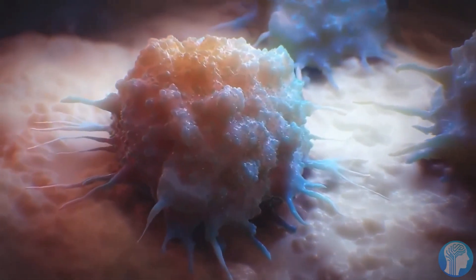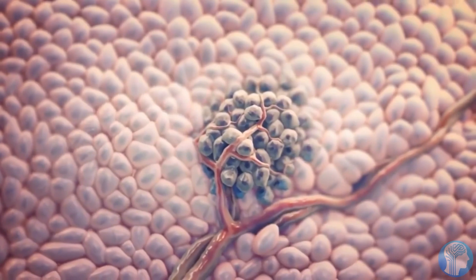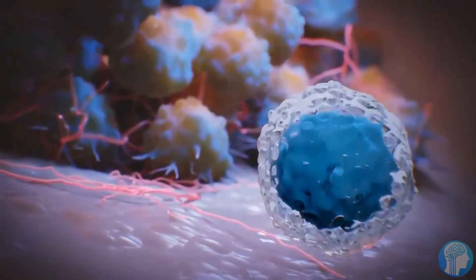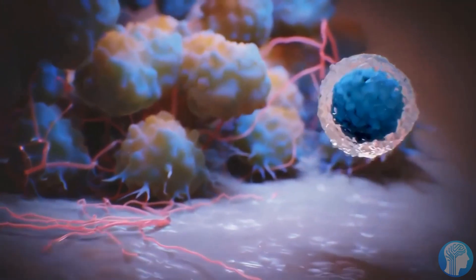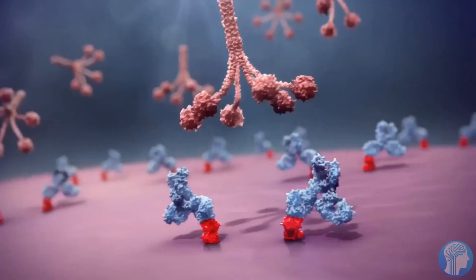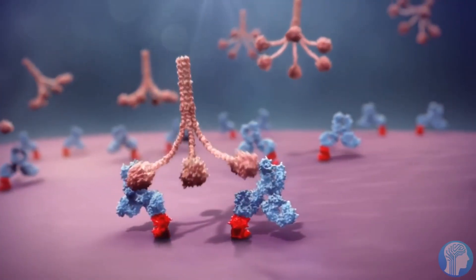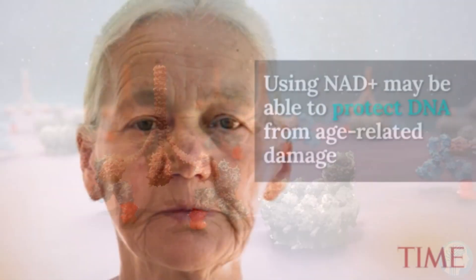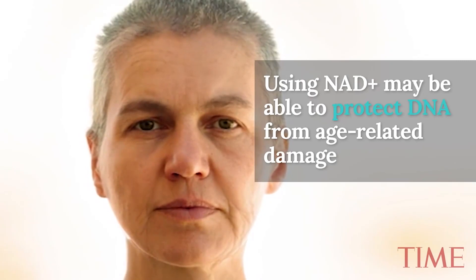Once upon a time, in a far-off land of test tubes and microscopes, a brilliant biologist named Shinya Yamanaka discovered a magical potion made of special proteins. These proteins, known as the Yamanaka Factors, had the power to turn adult cells into versatile stem cells, and for this discovery, Shinya was awarded a very prestigious prize, a Nobel Prize.